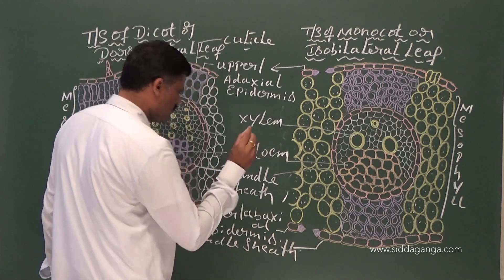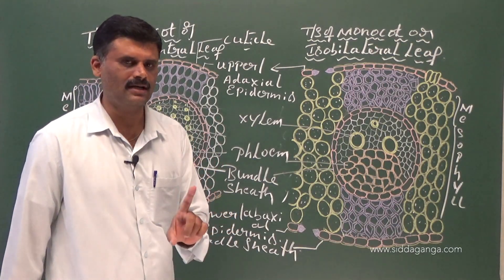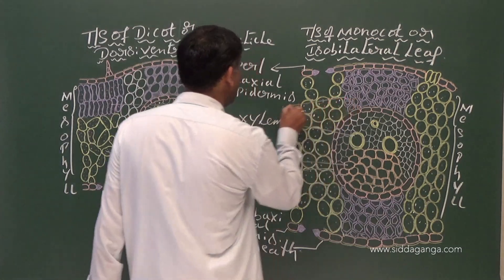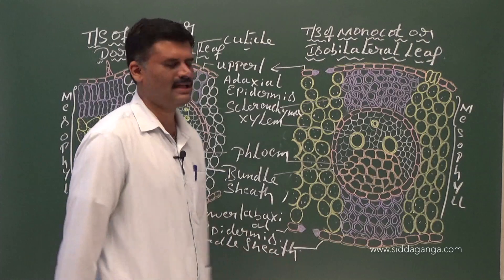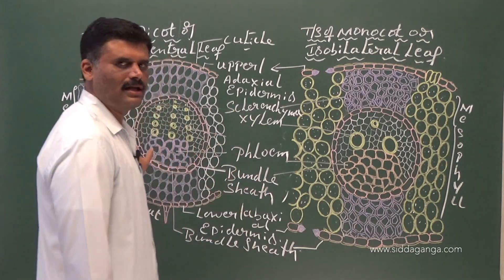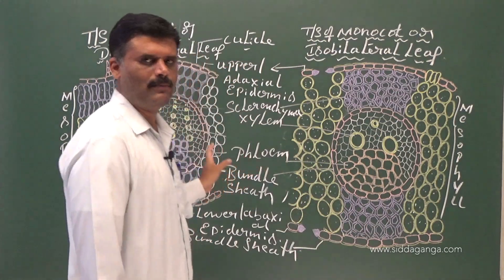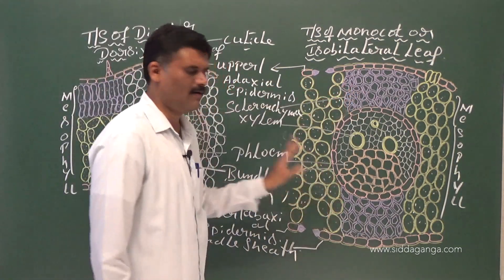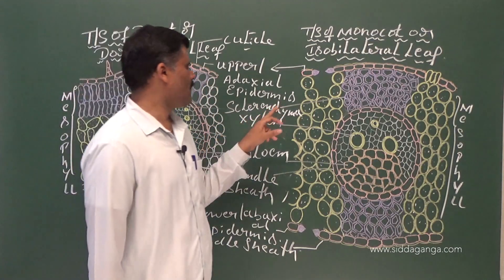In both dicot leaf and monocot leaf, the bundle sheath is made up of parenchyma. But the bundle sheath extension in monocot leaf is made up of sclerenchyma. In dicot leaf, the bundle sheath extension is made up of collenchyma, whereas in monocot leaf the bundle sheath extension is made up of sclerenchyma.